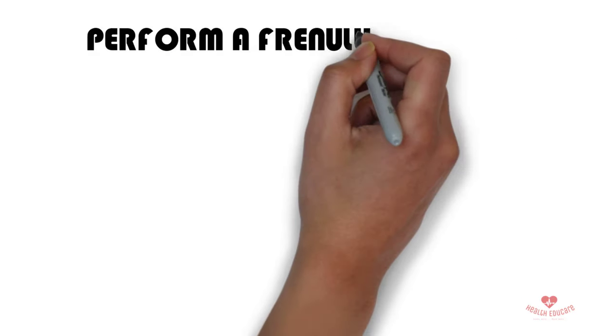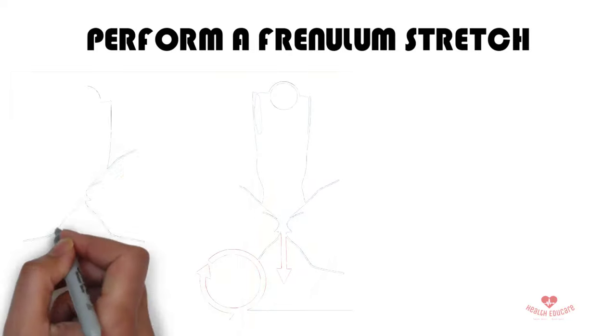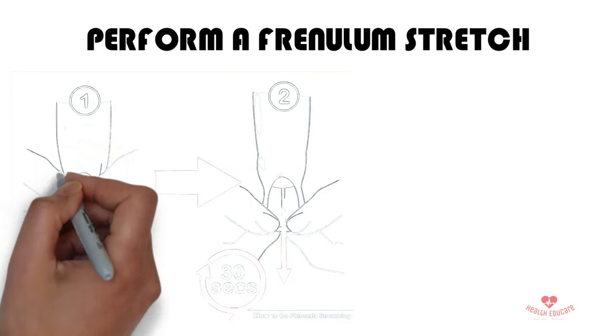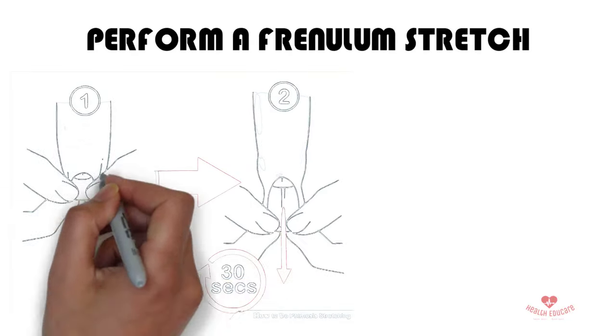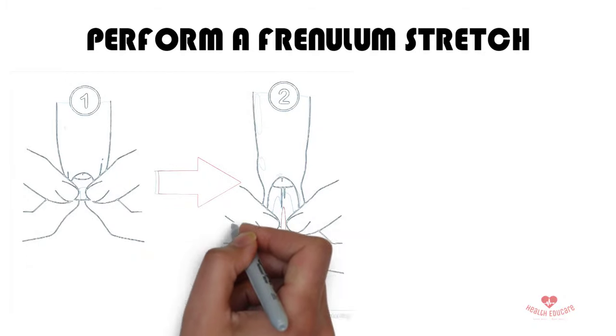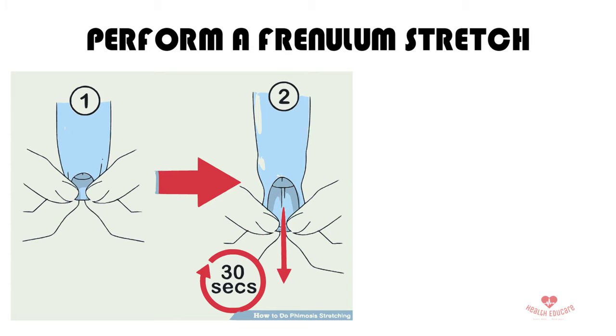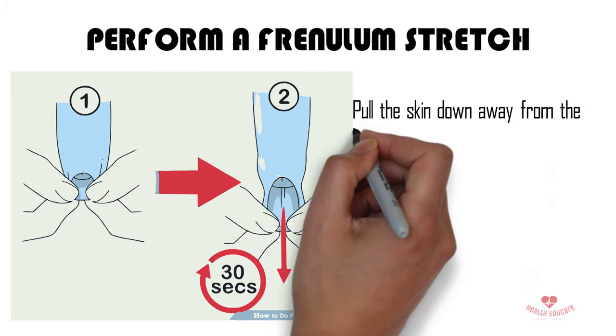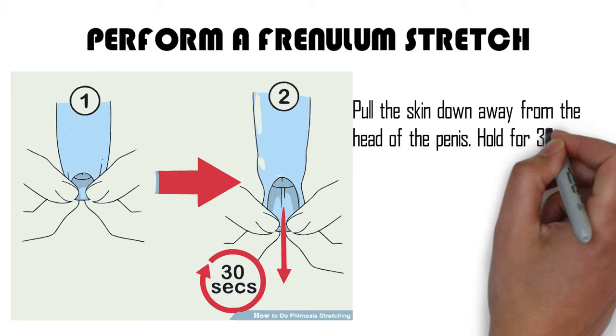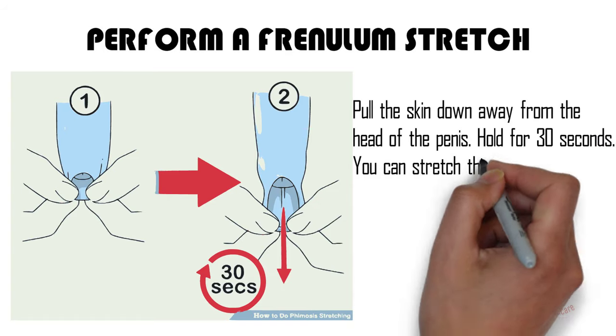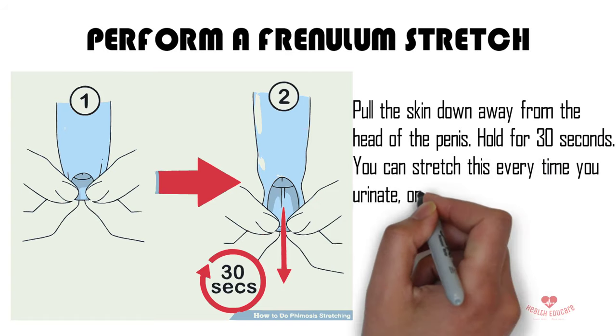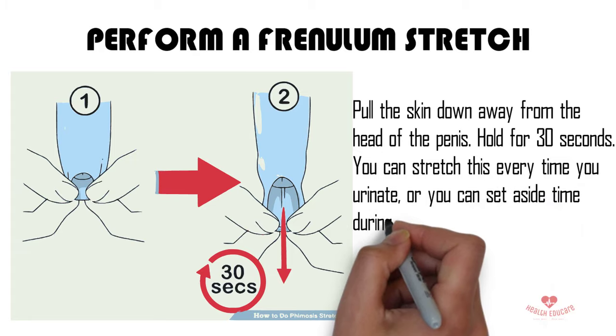Perform a frenulum stretch. If the foreskin is not long enough, you may need to stretch the frenulum. Take the foreskin where it connects to the frenulum just under the head of the penis between your index finger and thumb. Pull the skin down away from the head of the penis. Hold for 30 seconds. You can stretch this every time you urinate, or you can set aside time during each day.